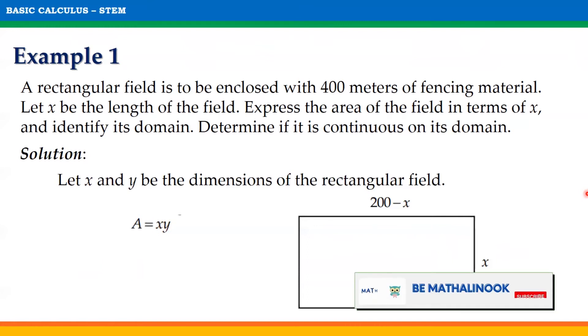Moreover, remember that the area of a rectangle is equal to the product of its dimensions. With this, area will be equal to x times 200 minus x, which is equal to 200x minus x squared when simplified.